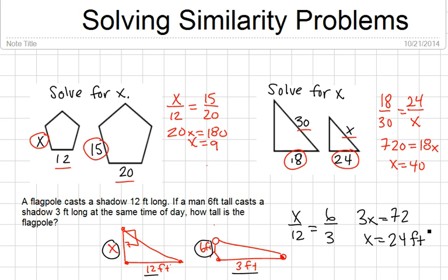So if you go back through and try to solve these, but you have a different proportion, that might be okay. So just check to see if you still get, for the first one, x equals 9. And for the second one, x equals 40. And then for the third one, x equals 24. Because you want to make sure that you're setting up these proportions correctly.